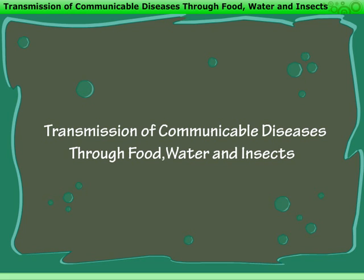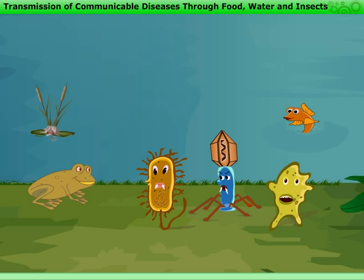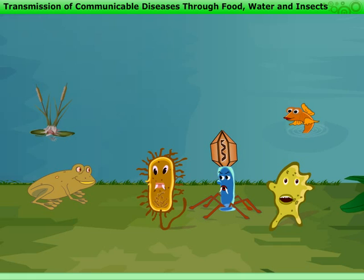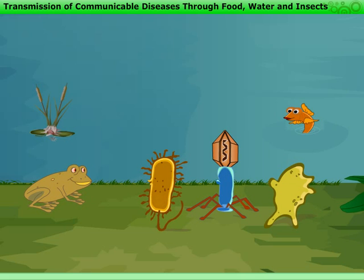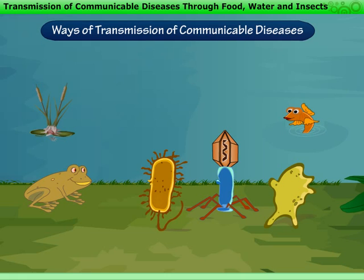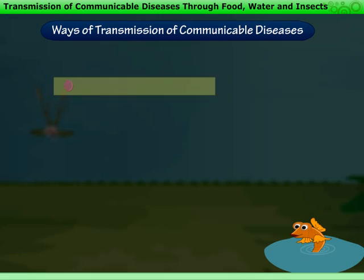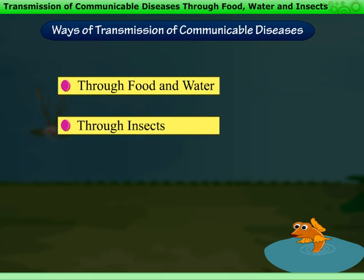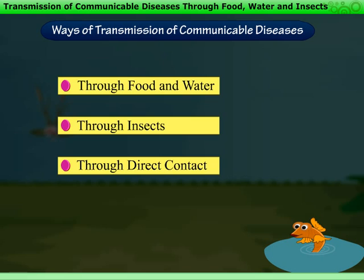Transmission of Communicable Diseases Through Food, Water and Insects. It is a beautiful morning. A fish in the lake listens to the conversation amongst some microorganisms and Mr. Frog. They are discussing about the diseases that spread through air. She tells them that apart from air, other ways of transmission of communicable diseases are through food and water, through insects and also through direct contact.